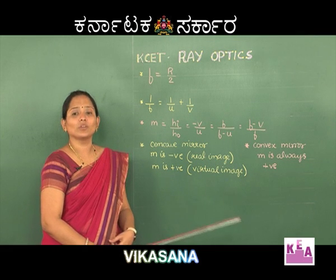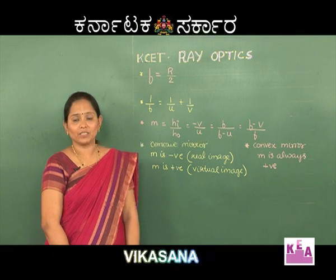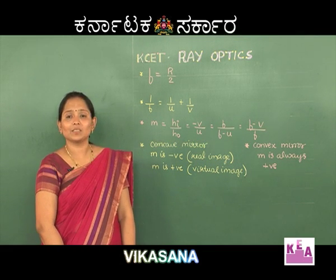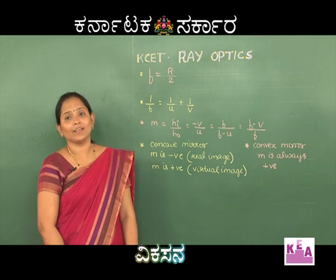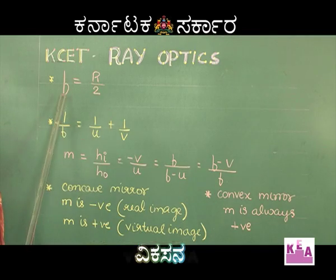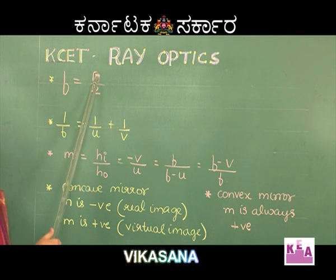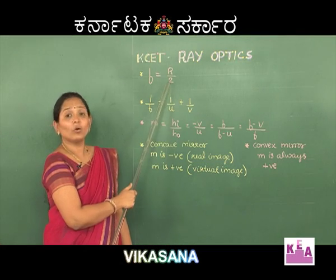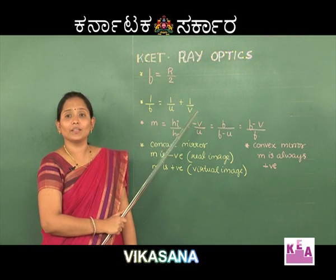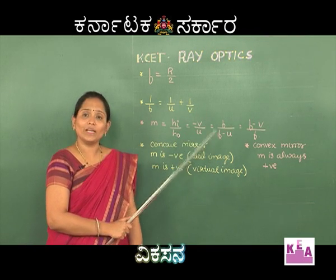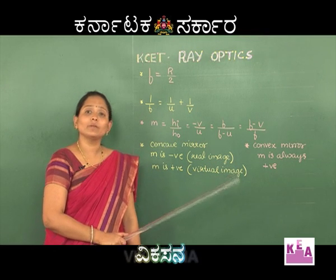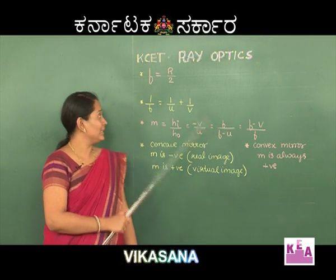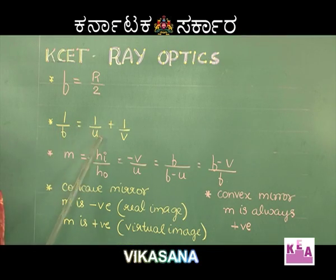Students, now let's move on to the concept of curved mirrors. You would have learnt about the relation between focal length and radius of curvature, given by f = R/2. We also have another very important relation connecting the focal length, the object distance, and the image distance, given by the mirror formula: 1/f = 1/u + 1/v.